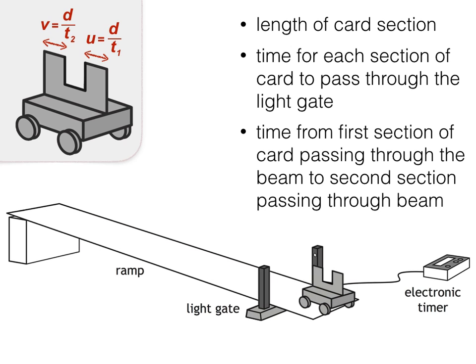By dividing the length of the first section by the time taken for it to pass through the light gate, we can work out the initial velocity of the trolley U. Dividing the length of the second section by the time taken for it to pass through the light gate, we can then work out the final velocity of the trolley V.